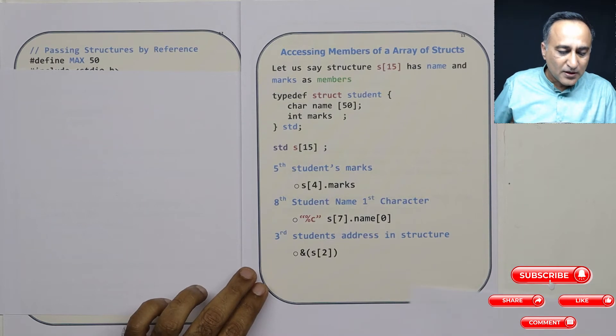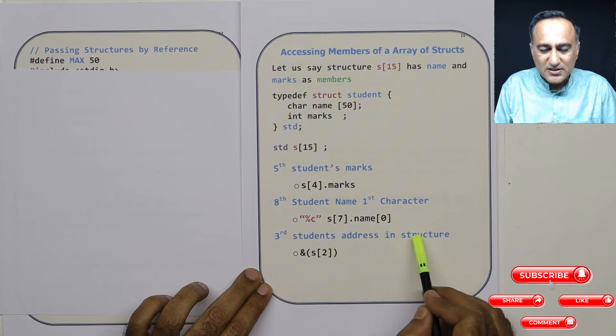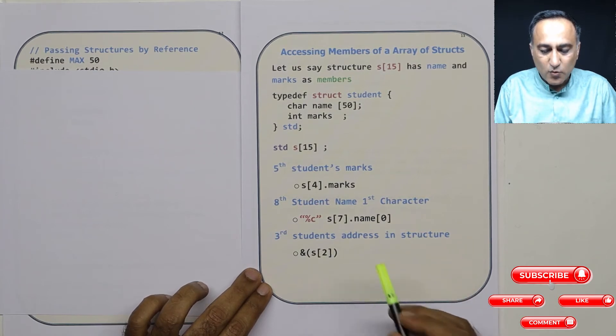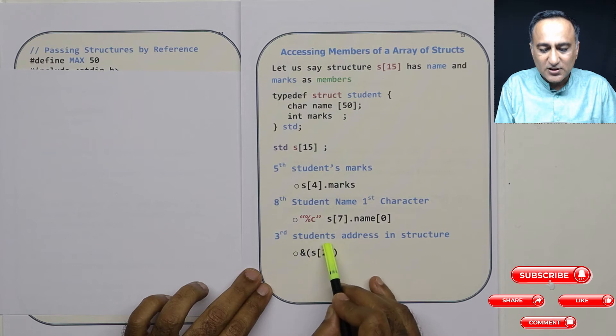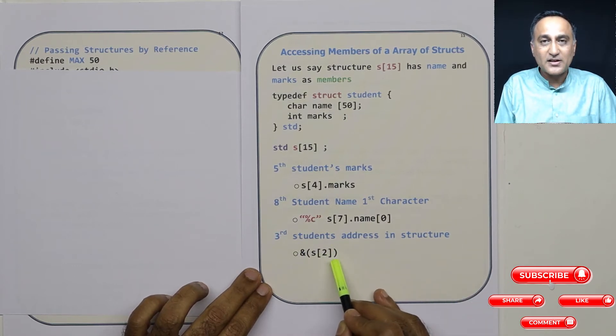Now, if I want to refer to the address of the third student in the structure, then it is going to be address of s of two.